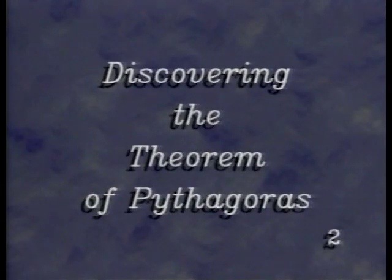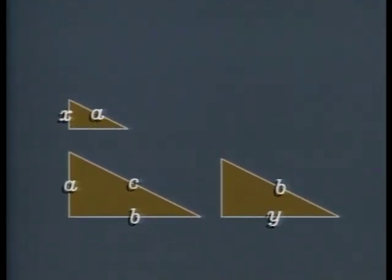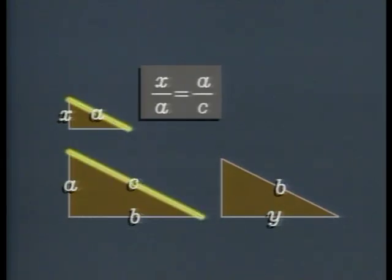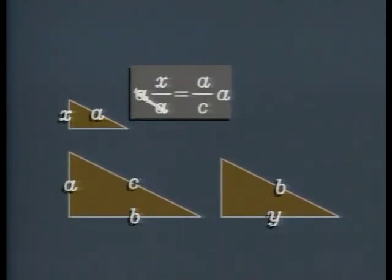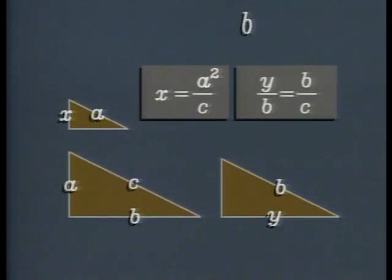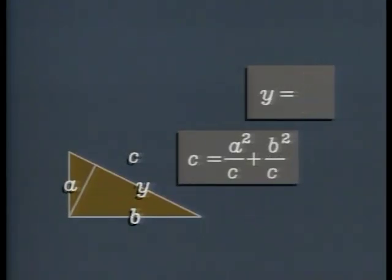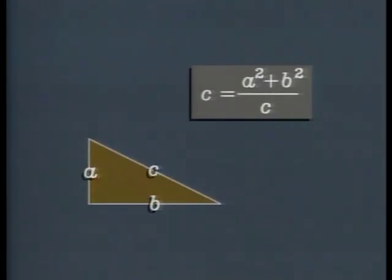Here's one way to solve it. Draw a line from the right angle perpendicular to the hypotenuse, breaking it into two segments, X and Y. This divides the triangle into two smaller right triangles. All three triangles are similar, so ratios of corresponding sides are equal. We multiply both sides by A to solve for X. These ratios of corresponding sides are equal; we multiply by B to solve for Y. Now remember, the hypotenuse C is made up of two parts, X and Y. Putting these in, we find C equals A squared plus B squared divided by C. So, C squared equals A squared plus B squared.